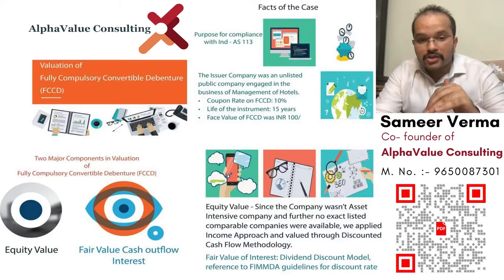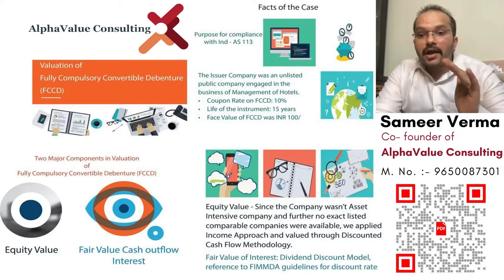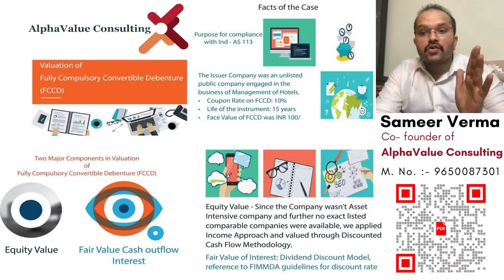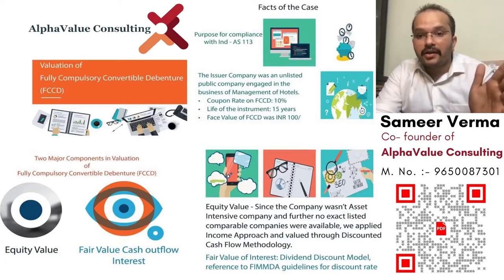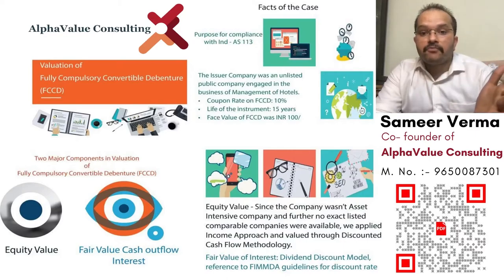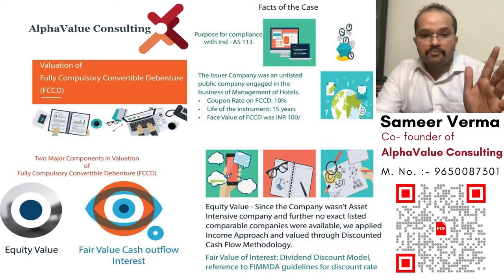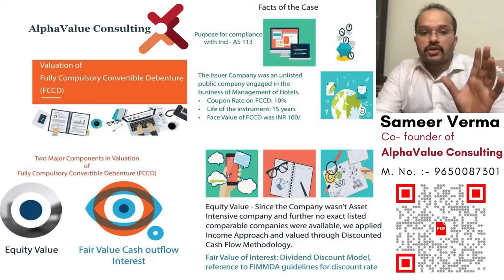However, in the case I handled, the company is not listed on any recognized stock exchange, nor has it issued such type of FCCDs earlier. Therefore, I followed the Fixed Income Money Market and Derivatives Association of India (FIMMDA) guidelines, which state that if bonds, debentures, and preference shares are not rated by a credit agency and no corresponding rated bonds of the issuer exist, then the spread over BBB for the residual tenure marked up with 25% will be applicable. The credit spread, after all adjustments including the risk-free rate, came around to 15%.